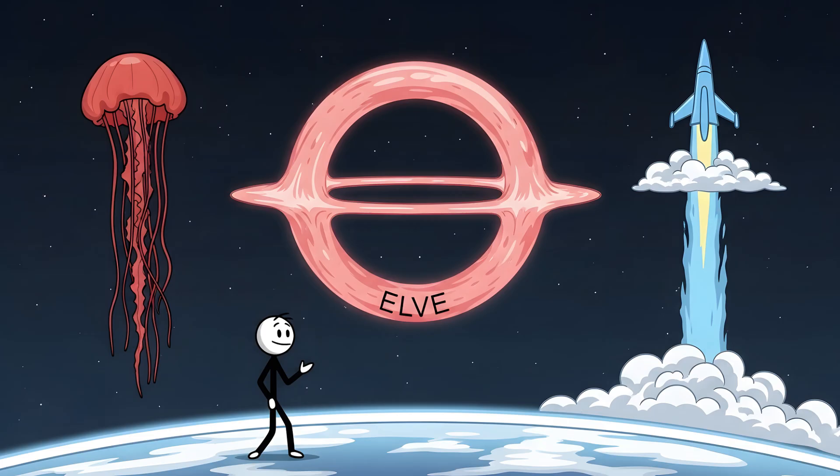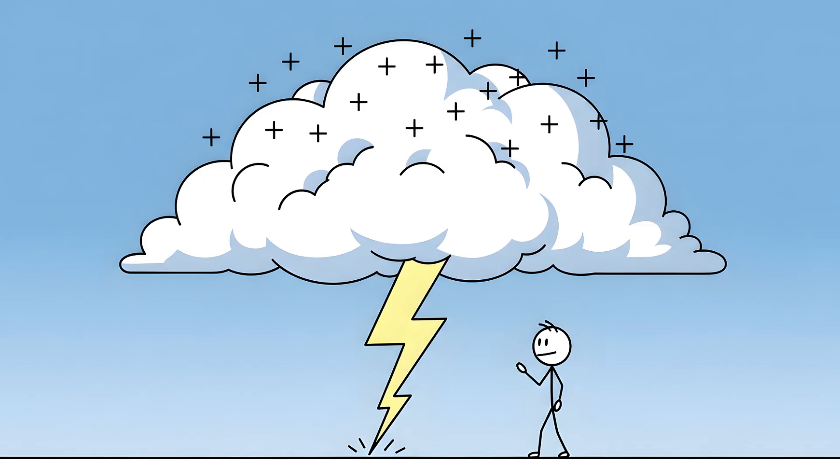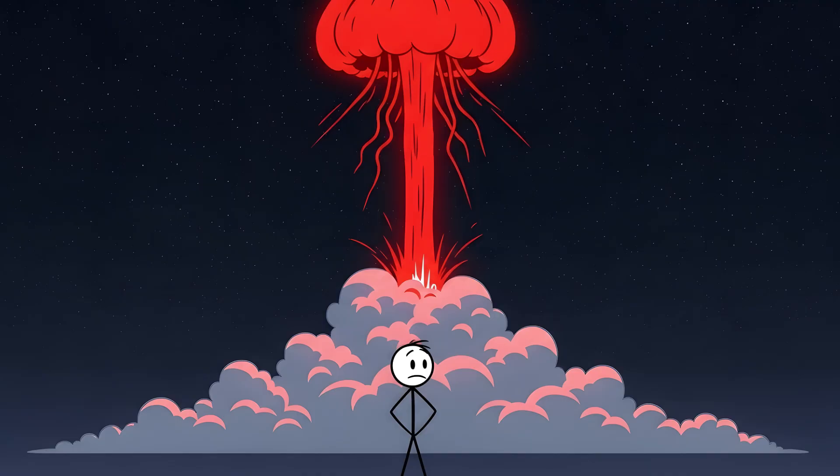We call them sprites, elves, and jets. They are transient luminous events, or TLEs, and they are a secret, violent world that exists for milliseconds at a time in the upper atmosphere, 50 to 90 kilometers up, a realm we used to think was boring. When a particularly powerful, positive lightning bolt strikes the ground from a thundercloud, it creates a massive and sudden change in the cloud's electric field. To balance the books, the cloud discharges energy upwards, into the ionosphere. This discharge is what creates these spectacular, ghostly forms.